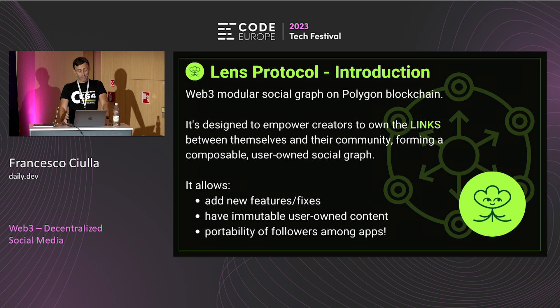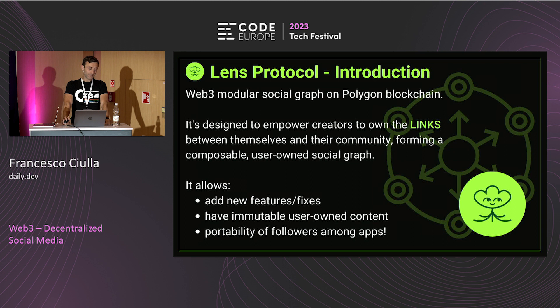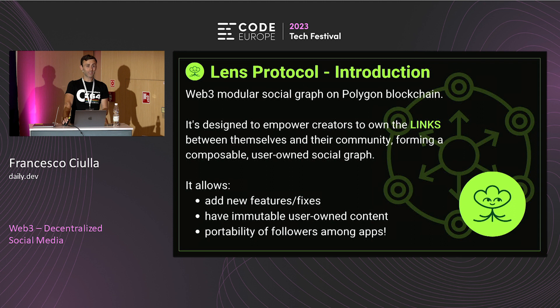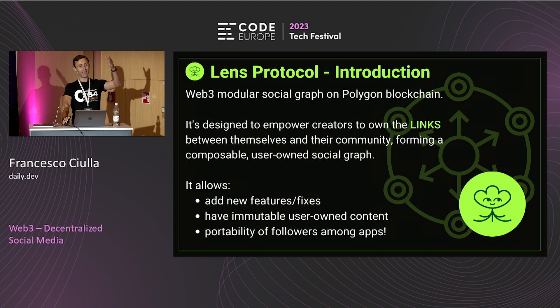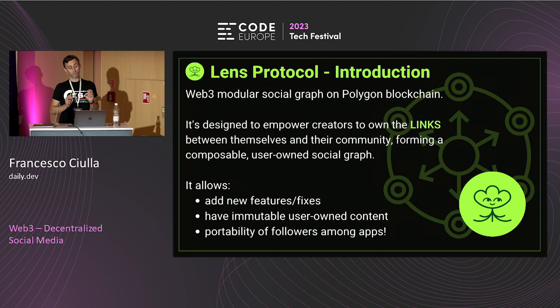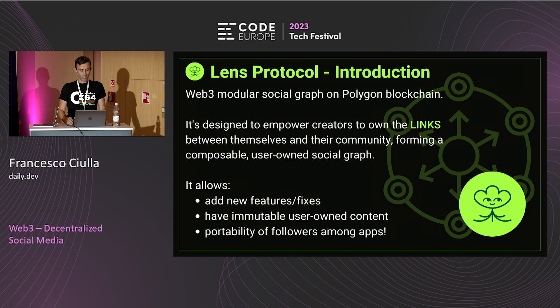Let me introduce a practical example: the Lens Protocol. How many of you have heard of it? Lens Protocol is a web3 modular social graph on the Polygon blockchain. The most important part — I want to stop a moment on 'social graph.' A social graph is not a single app but all the connections we have across our social media — for example, I follow Eddie, Eddie is subscribed to my YouTube channel, and so on. So Lens Protocol is a protocol, not a single application. This is very important.